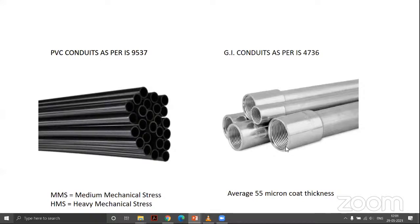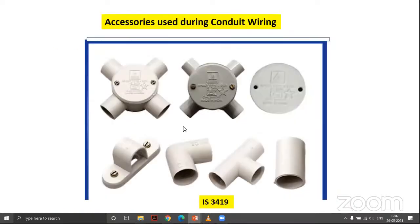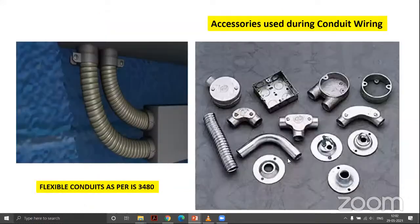For GI conduits, the number of threads engaged by a coupling equals the diameter of the conduit. PVC conduits use glue or solution to join components, available in sizes 20 mm, 25 mm, 32 mm (inner diameter). Accessories for conduit wiring as per IS 3419 include circular blocks, saddles, spacers, bends, and couplings. Flexible conduits used at junction boxes are as per IS 3480.